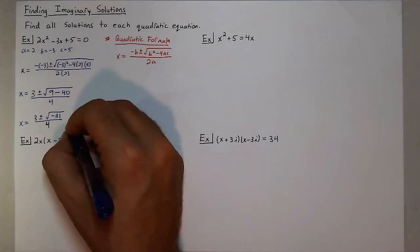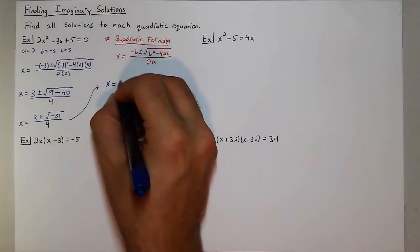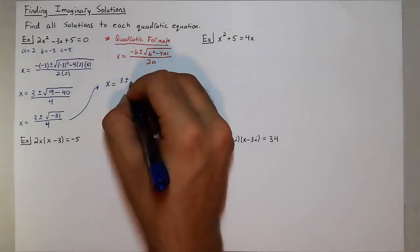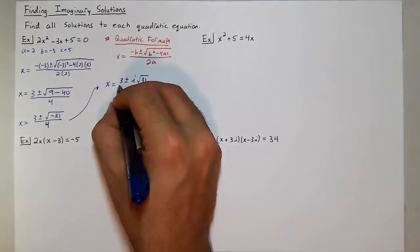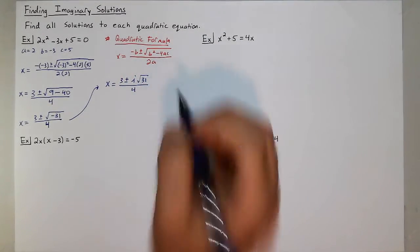So I can rewrite this as x equals 3 plus or minus the square root of negative 1, which is i, times the square root of 31. 31 is a prime number, so we can't simplify that any further.